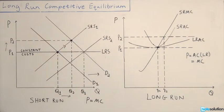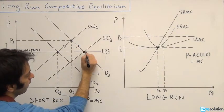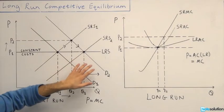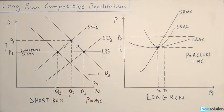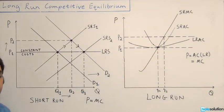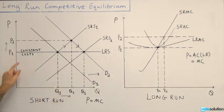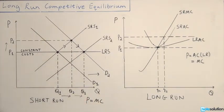Firms see the economic profit and enter the industry, causing supply to shift out, moving the equilibrium from the short-run point down to where D2 and the long-run supply curve intersect — this becomes our new equilibrium point. The price returns to P1, since that is the long-run equilibrium price representing the minimum efficient scale of production. However, quantity increases further to Q3, so the new long-run equilibrium is at price P1 and quantity Q3.